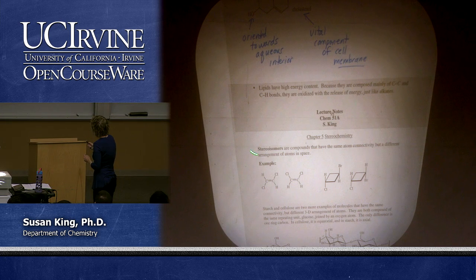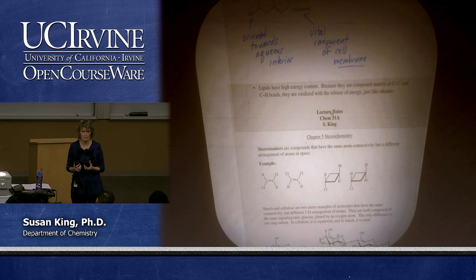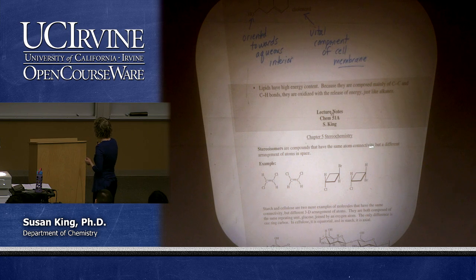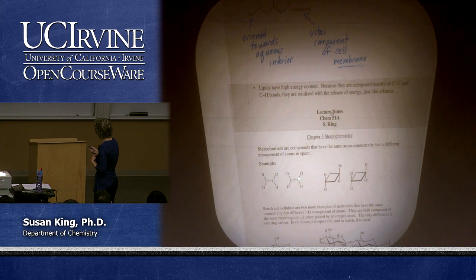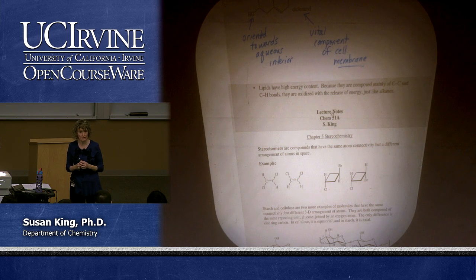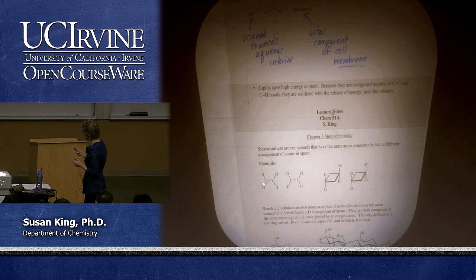Stereoisomers — new terminology here — are a type of isomer. We want to be specific: stereoisomers are compounds that have the same atom connectivity but a different arrangement of atoms in space. For example, a compound with a carbon-carbon double bond where this carbon is bonded to a chlorine and hydrogen, and that carbon is also bonded to a chlorine and hydrogen — same connectivity but different orientation in space. For this one, the chlorine is up and the other chlorine is down, so they are stereoisomers of each other.